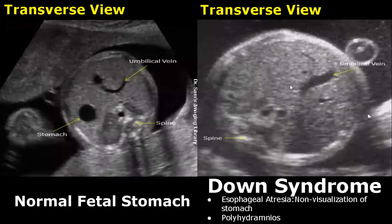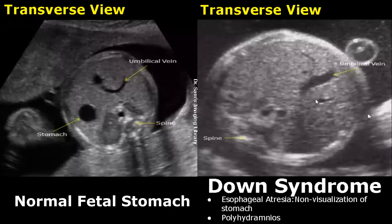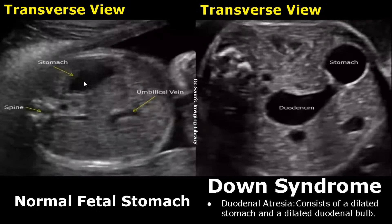A normal fetal stomach is seen as a round anechoic structure in the abdomen in a transverse view. A birth defect known as esophageal atresia is also sometimes associated with Down syndrome — the esophagus does not develop properly, leading to non-visualization of the stomach because no fluid reaches it and it remains persistently invisible. Duodenal atresia can lead to a dilated stomach and duodenum, giving a double bubble appearance, and in some cases it is associated with Down syndrome.